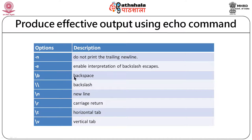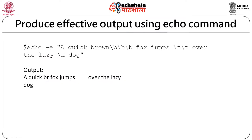The backslash escape sequences available with echo include: \b for backspace, \\ for a literal backslash, \n for a new line, \r for carriage return, \t for horizontal tab, and \v for vertical tab. When using any of these escape sequences, you must enable them by specifying the hyphen-e option along with the echo command.